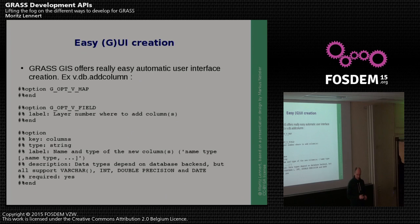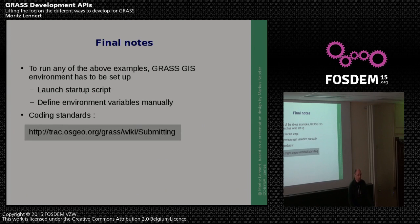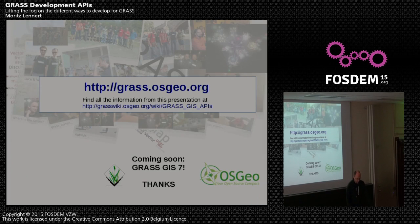As a final note, GRASS allows very easy user interface creation. You just define the different elements you need in your user interface and you get both a command line interface and a graphical interface automatically. All the examples shown of running GRASS from different programming languages require being within an environment set up for GRASS usage — either by launching the startup script or manually. GRASS also encourages people to use a series of coding standards, all listed on the submitting page. So that was it — enjoy GRASS 7. Thank you.